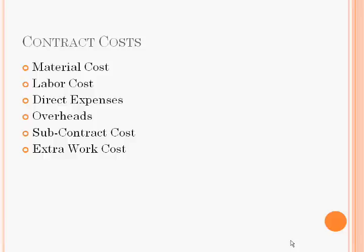Fifth is subcontract cost. Subcontract cost is paid for completing the main contract. And if any other extra work cost is incurred, we also record it in the contract account.